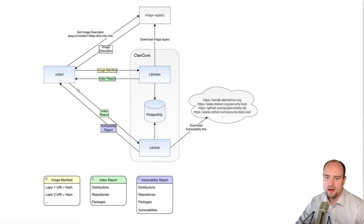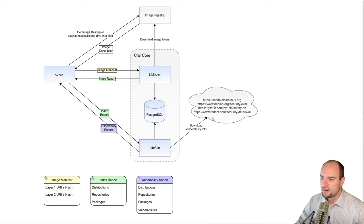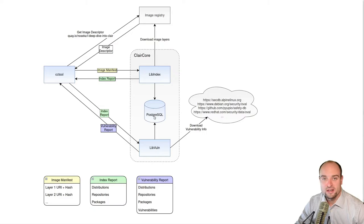On the left side of the diagram I'm showing the ClairCore tool, which is a client that drives the entire image scanning process. Before you can start scanning images you will need to bring up the ClairCore services. Right after the libvulnerability service starts up, it will download the latest vulnerability information from various databases provided by the distributors, which are publicly available on the internet. libvulnerability will store this information in the Postgres database and also check for updates every 30 minutes.